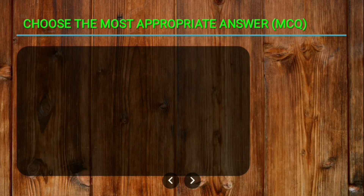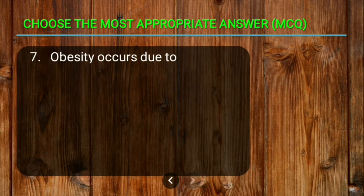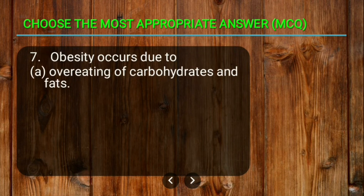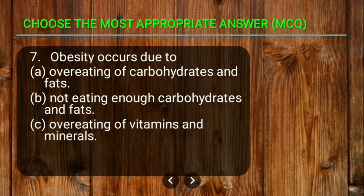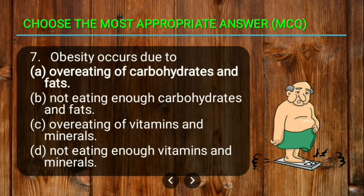Question seven: obesity occurs due to — overeating of carbohydrates and fats, not eating enough carbohydrates and fats, overeating of vitamins and minerals, or not eating enough vitamins and minerals. Obesity occurs because of overeating of carbohydrates and fats, so we should avoid overeating of carbohydrates and fats.